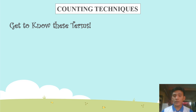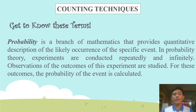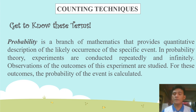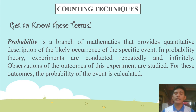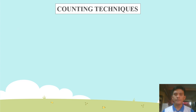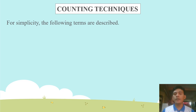We need to get to know these terms first before we go on to our discussion for counting techniques. Probability is a branch of mathematics that provides a quantitative description of the likely occurrence of a specific event. In probability theory, experiments are conducted repeatedly and infinitely, while observations of the outcomes of this experiment are studied. For these outcomes, the probability of the event is calculated. For simplicity, the following terms are described.